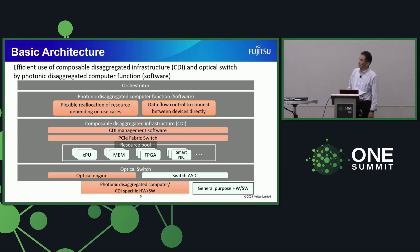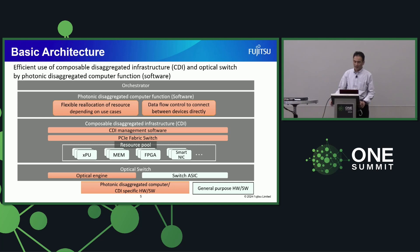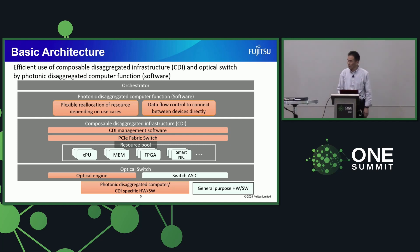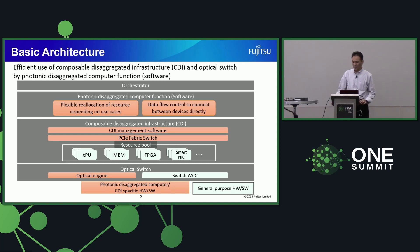This is the basic architecture of our developing CDI — Composable Disaggregated Infrastructure — and Optical Switch. The CDI consists of the resource pool and the PCIe Fabric Switch for management, along with management software. We also need an orchestrator and software to allocate resources. In the future, devices will be connected to each other by photonics via the Optical Switch, though we are still discussing this.